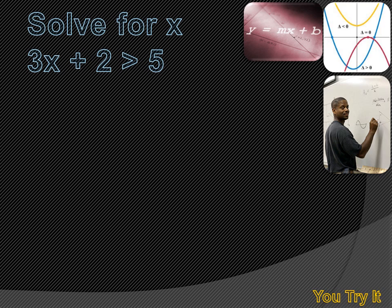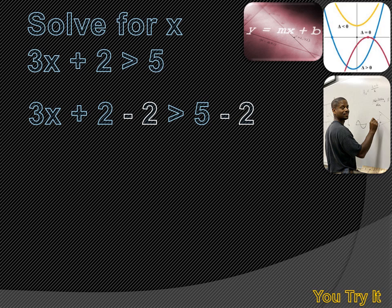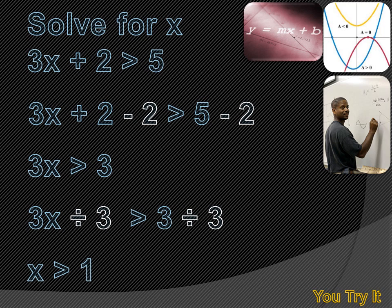We've got 3x plus 2 is greater than 5 — this is a two-step inequality. First, let's get rid of that plus 2 by subtracting 2 from both sides: 3x plus 2 minus 2 is greater than 5 minus 2. Simplifying gives 3x is greater than 3. Now I divide both sides by 3, and I get x is greater than 1.